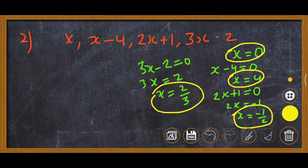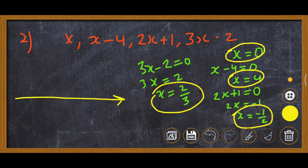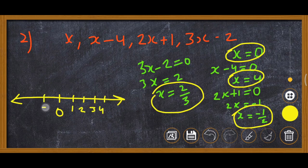Now we will put these values on the number line. First of all, draw a line. In the middle take 0, then 1, 2, 3, 4 on the right side, and minus 1, minus 2 on the left side.